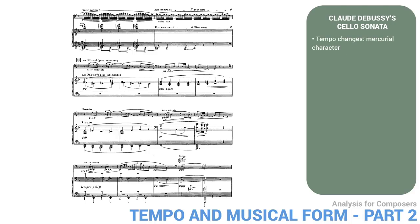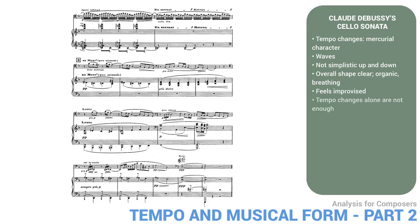As we can see, the tempo changes in this movement are central to its mercurial character and form. The overall momentum is organized into several waves, culminating at the climax at rehearsal number two. These waves are not just simplistic up-and-down motions, but their overall shape remains quite clear, giving the music an organic breathing quality. Flexibility of tempo imparts an almost improvised feel to the music. It needs to be emphasized that tempo changes alone cannot achieve this effect. Rather, what counts is how they are coordinated with other dimensions of the music — and that is what a sensitive analysis should attempt to explain: how all the dimensions of the music work together towards the musical result.